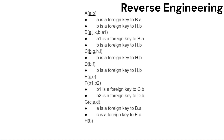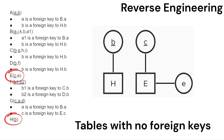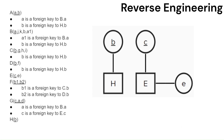So what is our process? First, we will single out tables with no foreign keys. These will be strong entities in the ER model, and their columns will be attributes. In this particular schema, the tables H and E meet this classification. So H has a primary key of B, and E has a primary key of C and an additional attribute of lowercase e.